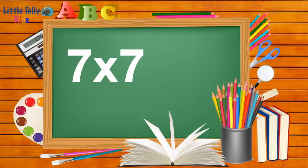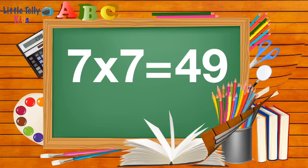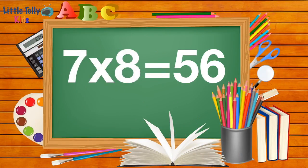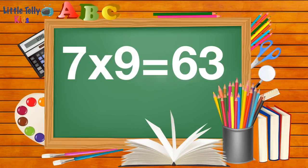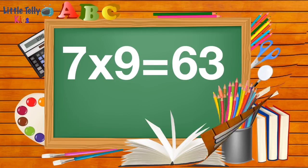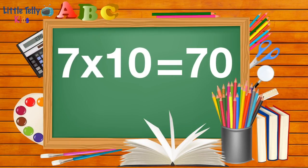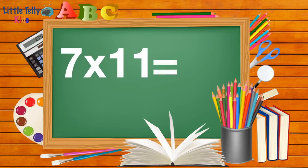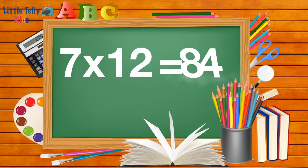7 sevens are 49. 7 eights are 56. 7 nines are 63. 7 tens are 70. 7 elevens are 77. 7 twelves are 84.